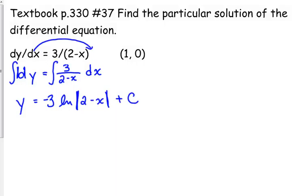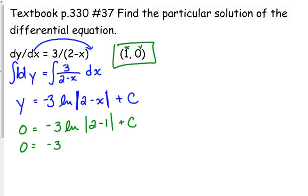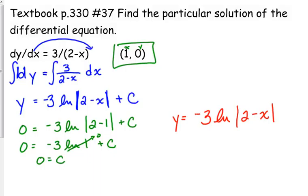They want us to find the particular solution. That's why they give us this piece of information right here. The function, when x is 1, the function equals 0. So plug that in. x is 1, y is 0. We're going to solve for c. We get negative 3 times the natural log of 1. The natural log of 1 is 0. So 0 is our c. Our particular solution is y equals negative 3 natural log of the absolute value of 2 minus x.